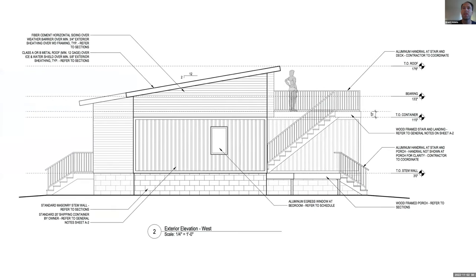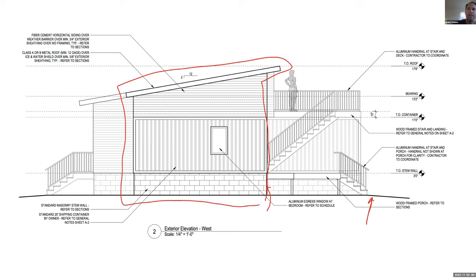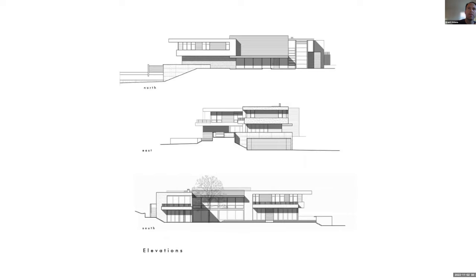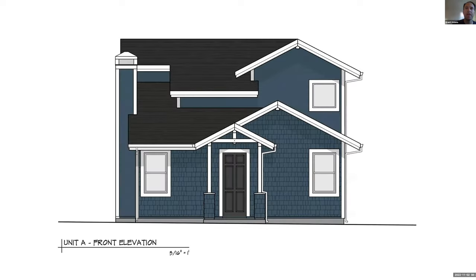Here is a very clear example: ground level is the thickest line, followed by the building part that pops out toward us as the next thickest, then the next level of the building further back, and so on. These examples also have thicker shadows being shown, which can help add depth.